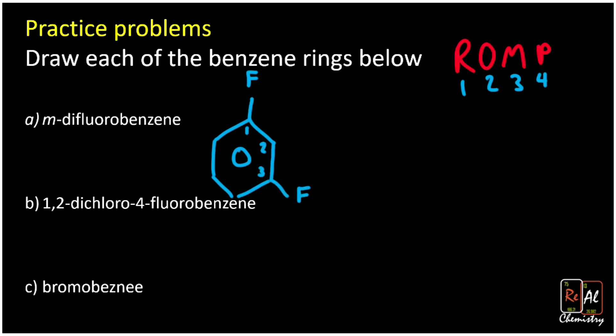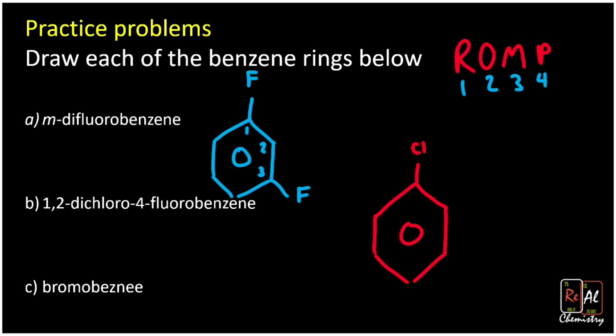What about 1,2-dichloro-4-fluorobenzene? That's three substituents. We draw the benzene ring: chlorine at position one, chlorine at position two, and a fluorine at the fourth position — which lands right at the bottom.